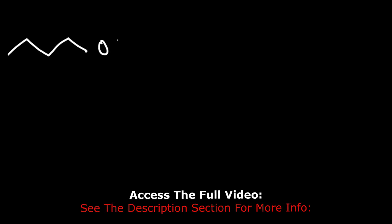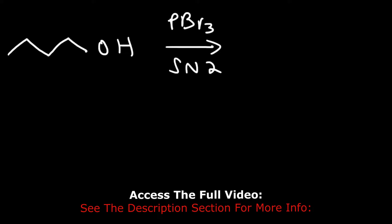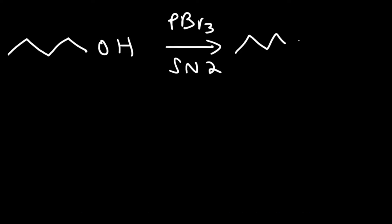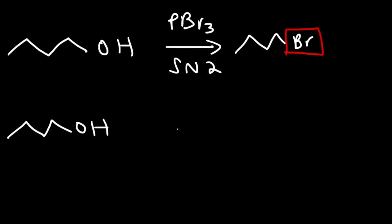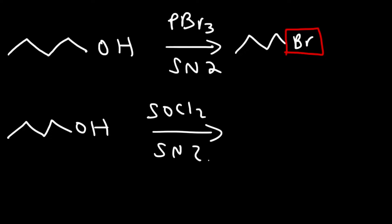There are other ways to convert alcohols into alkyl halides. One reagent is PBr₃ (phosphorus tribromide), which works through an SN2 mechanism, replacing the OH group with a bromine atom to produce an alkyl bromide. Another is SOCl₂ (thionyl chloride), which also works through an SN2 mechanism but replaces the OH with a Cl.